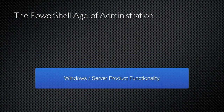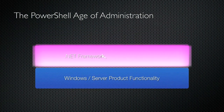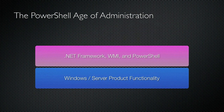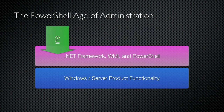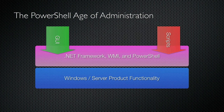In the PowerShell age, that product functionality is still built first. However, the next step is not to build a GUI. Instead, all of the product's administrative capability is written in the .NET framework, or in WMI, and exposed through Windows PowerShell commands. Once those task-based commands are available, both GUI consoles and scripts can be built on top of those commands, placing the GUI and scripts on equal footing so that anything can potentially be done in either environment, making every aspect of the product available to automation.